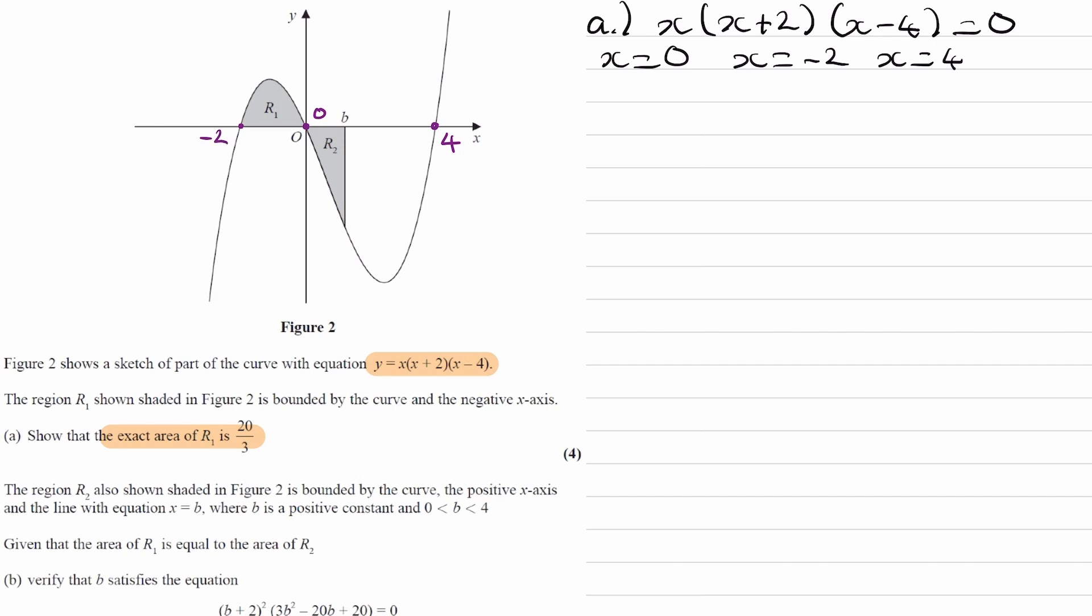So then to work out what R1 is, we have to integrate what we have here between minus 2 and 0. First expand out that cubic. I'll expand out the second two brackets first, so it would be x squared plus 2x minus 4x, which is minus 2x, minus 8. Then expand this out again: x cubed minus 2x squared minus 8x.